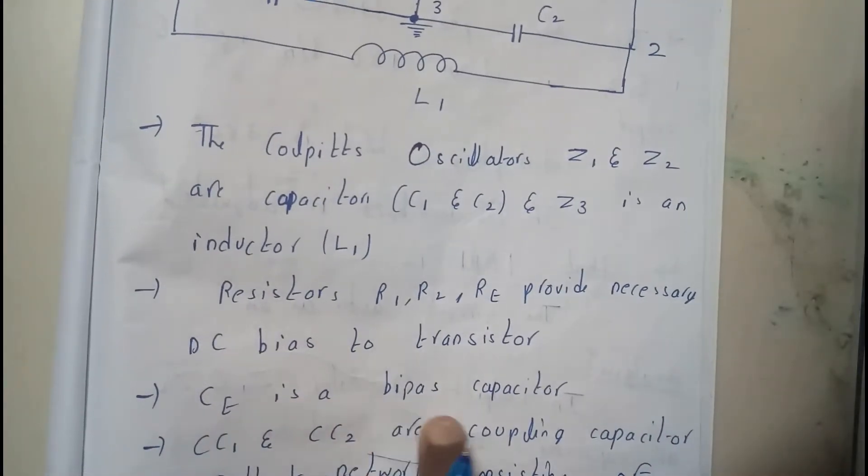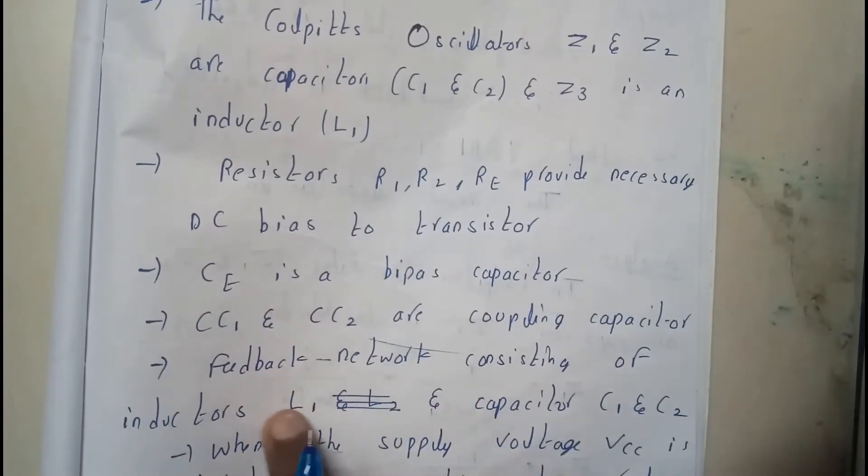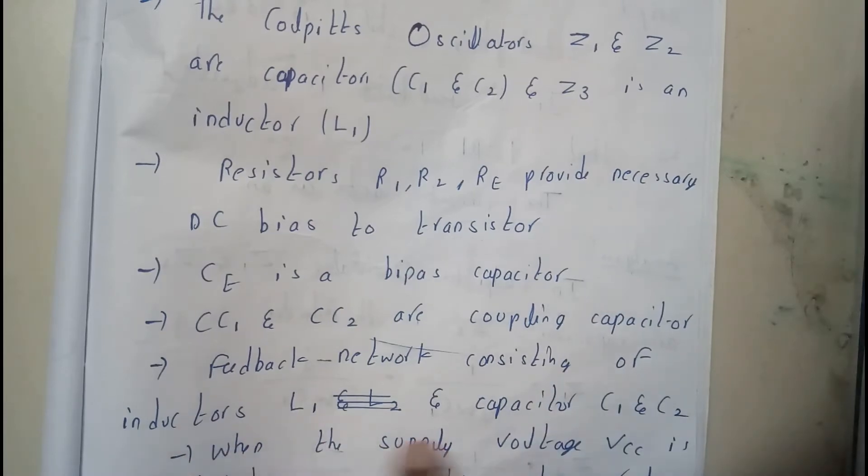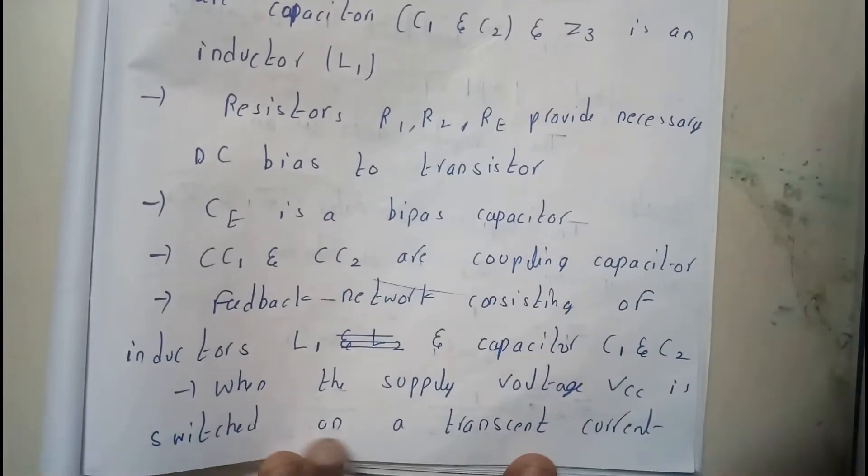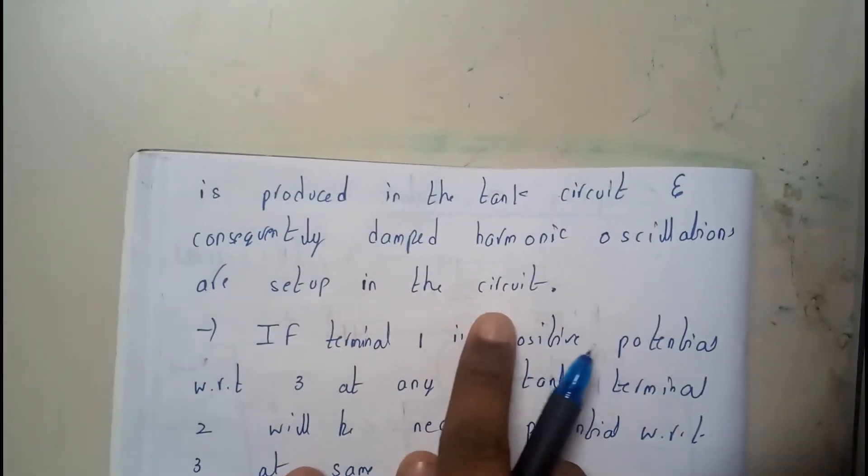And CE is a bias capacitor. C1 and C2 are the coupling capacitors. So feedback network consists of inductor L1 and capacitor C1 and C2. When the supply voltage VCC is switched on a transient current is produced in the tank circuit and consequently damped oscillations are formed and set up in the circuit.